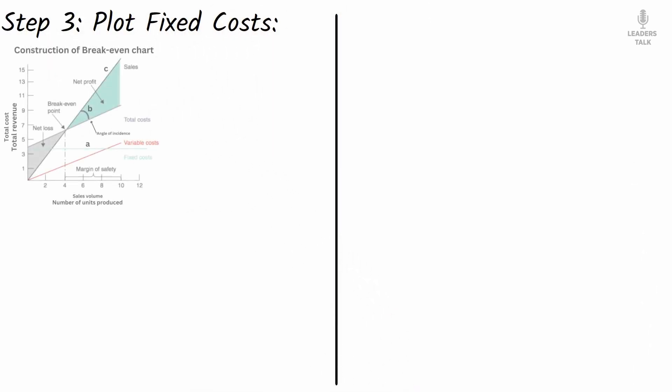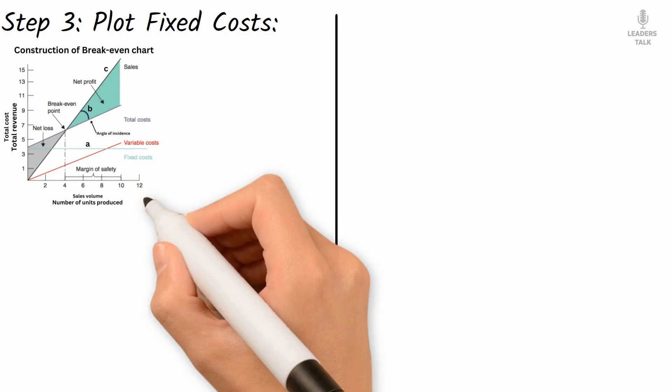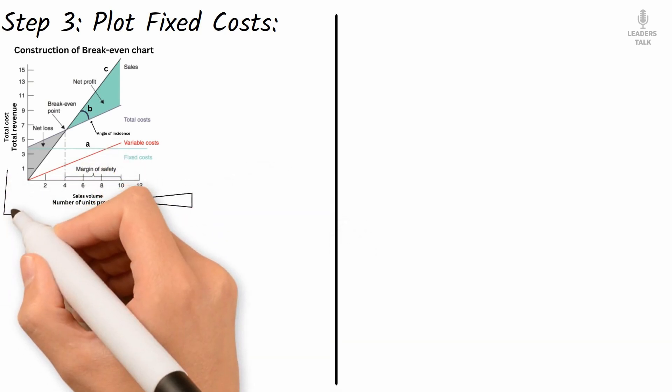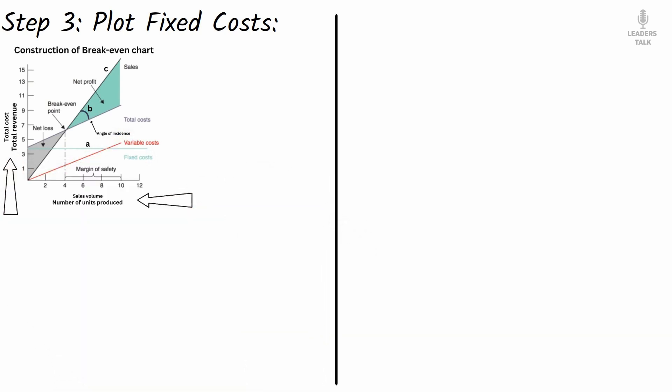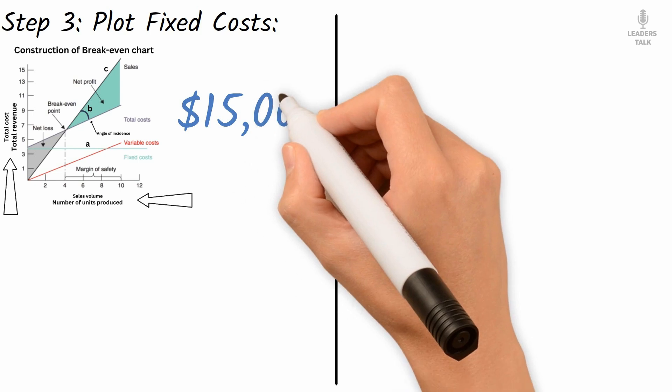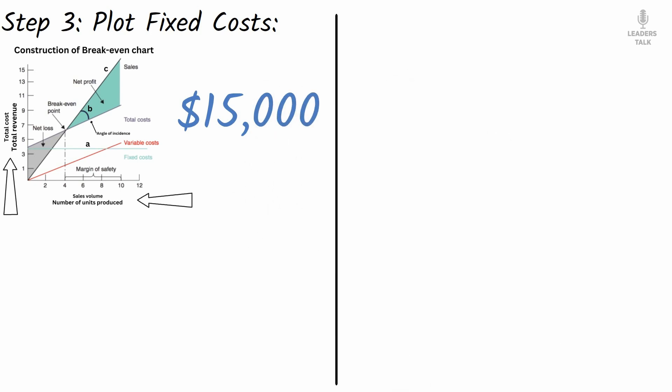Step 3: Plot fixed costs. On the graph, the x-axis represents the number of units sold, and the y-axis represents costs and revenue. Fixed costs are a horizontal line at $15,000.